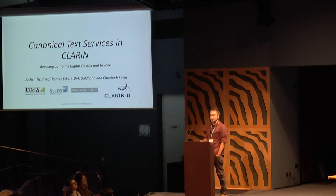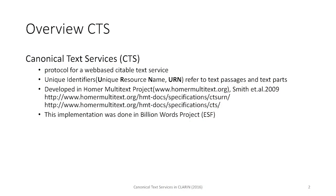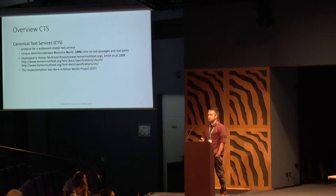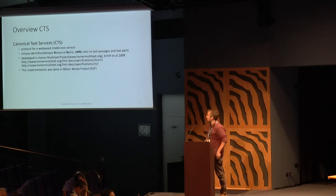Canonical text service, or CTS, is a protocol for a web-based citable text service, or you could also call it a text communication protocol. The idea is that it uses a URN notation to refer to text passages or text parts, like chapters or sentences or something like this.